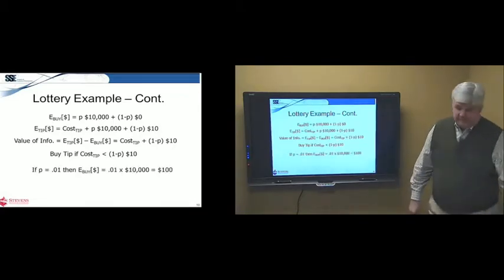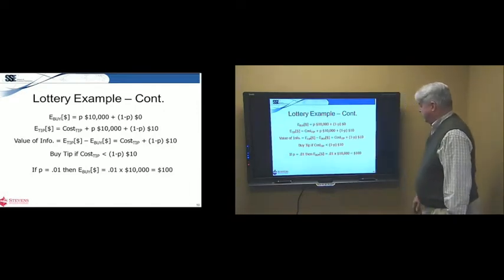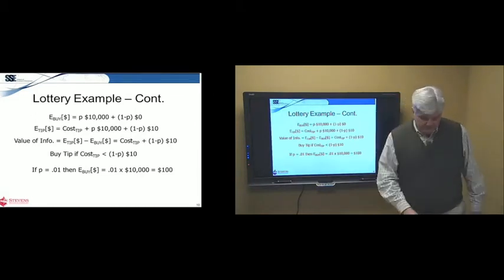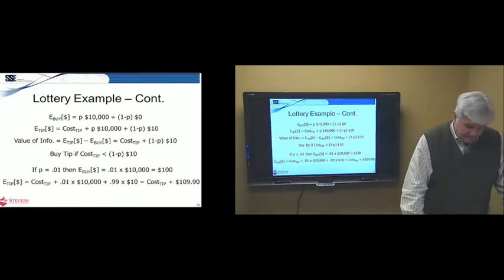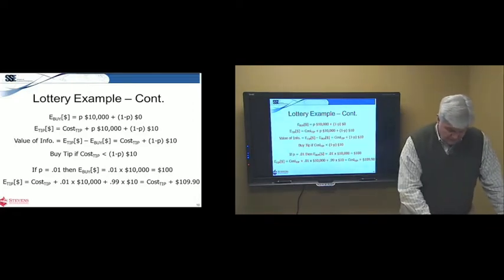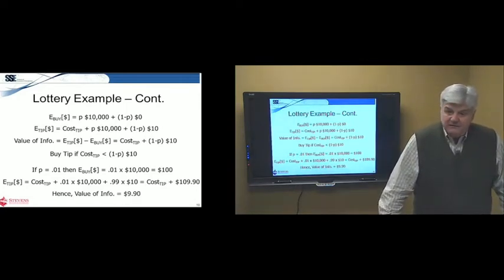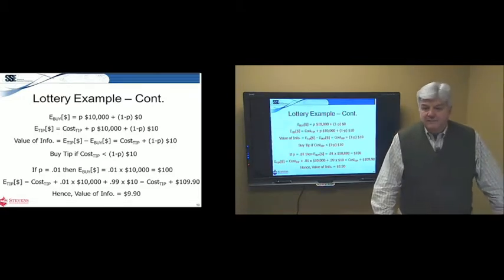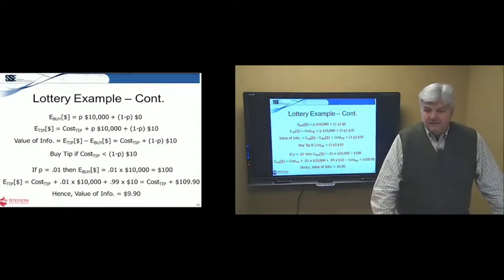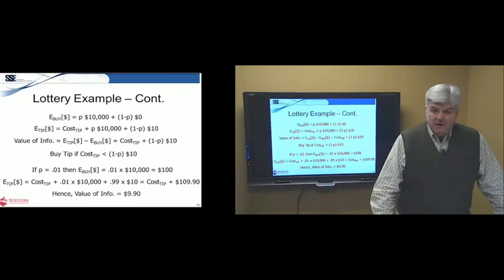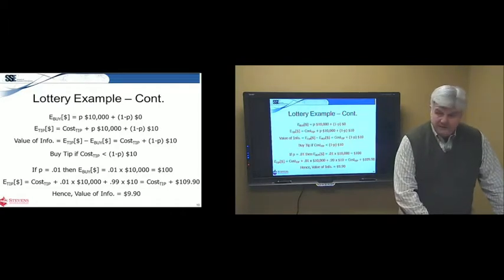If p equals 0.1, then, and we're talking about, in this case, a $10,000 lottery, then the expected value of buying is $100. And the tip, if you buy the tip, it's 109.90. And so, therefore, the value of the information is $9.90. So, for example, if the guy behind the cash register says to you, I'll sell you a tip for $9. That tells you whether the ticket you're about to buy is a winner or not. That's a good deal. And for this lottery, for these parameters, that's a good deal. Because you buy the tip for $9, chances are he's going to say it's a losing ticket. So, you don't buy the ticket. You saved a dollar. If you buy it and he says it is the winning ticket, of course, then you get a huge amount of money from it. So, that's how we think about information for reducing uncertainty.